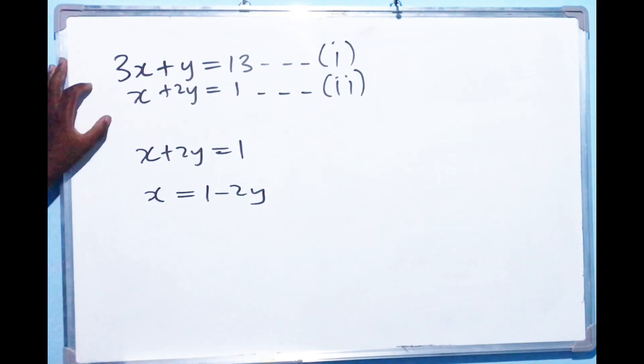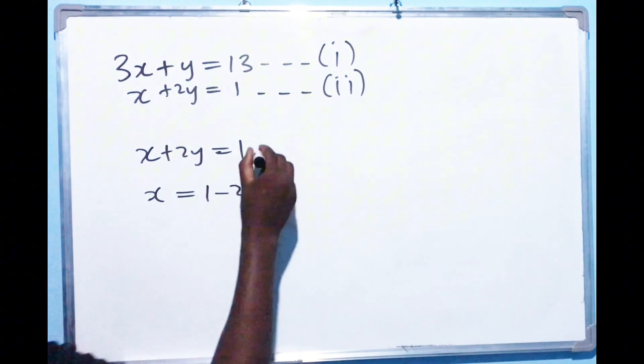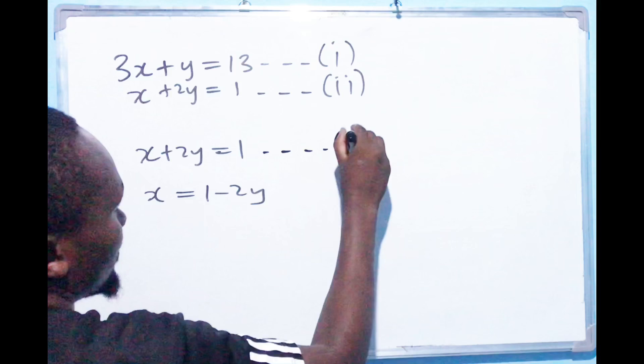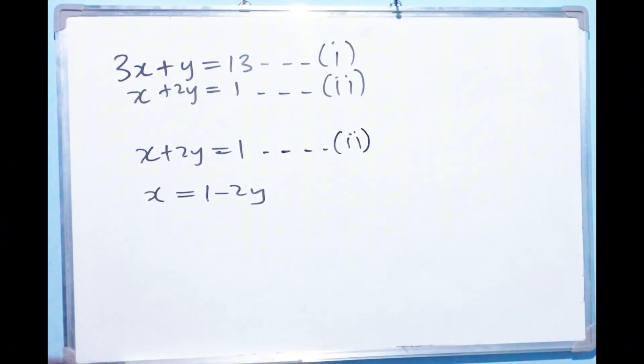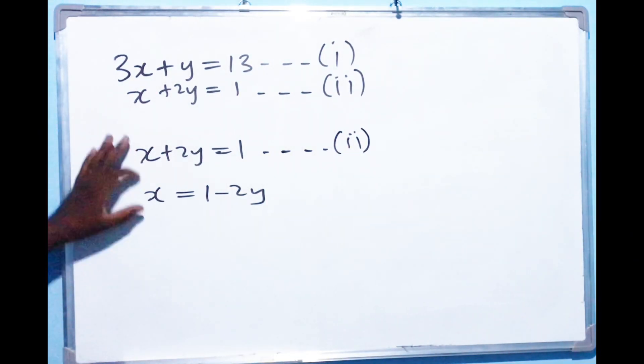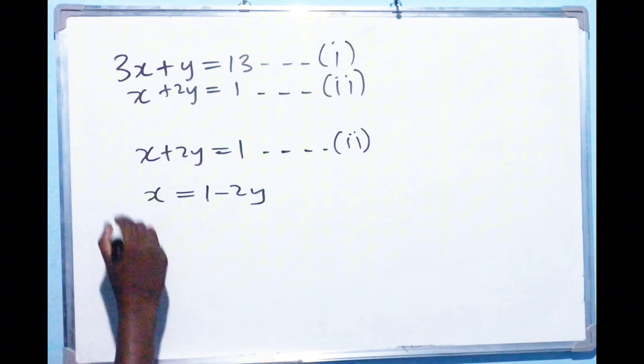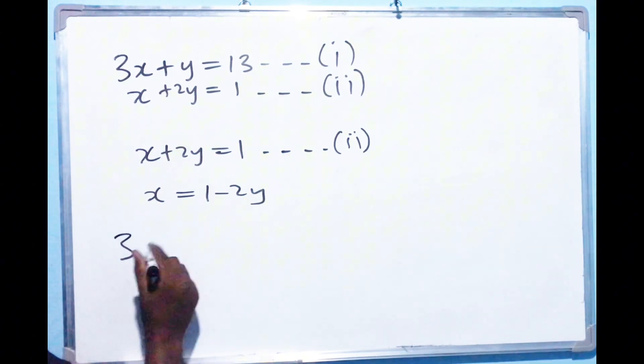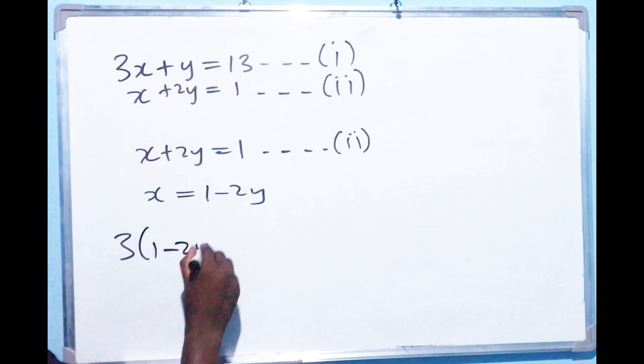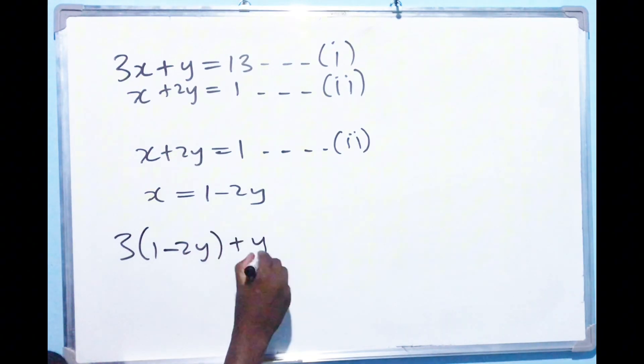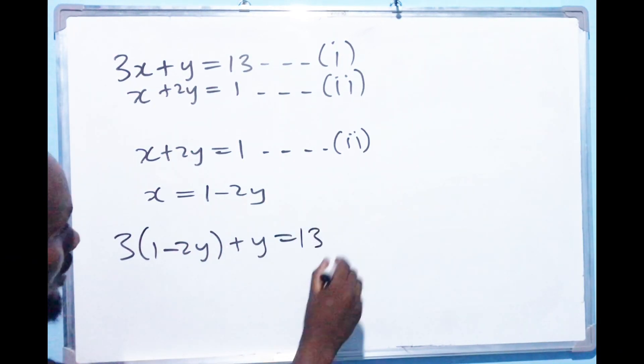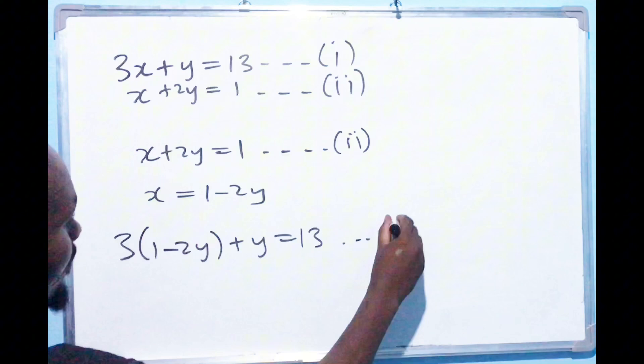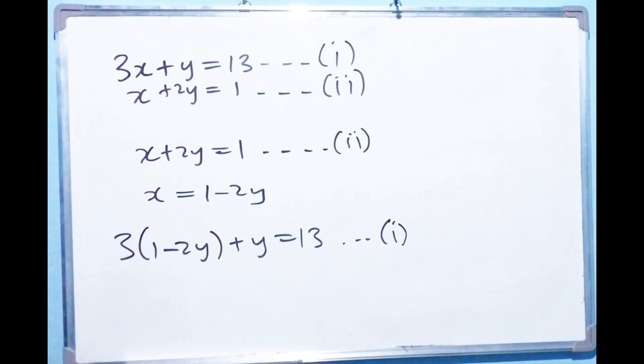So because we picked equation 2, that would mean that we can now replace the value of X in equation 1. So equation 1 we have 3, well it is actually X, we can put this so 1 minus 2Y plus Y should be equal to 13. So that is actually equation 1 that we have picked.